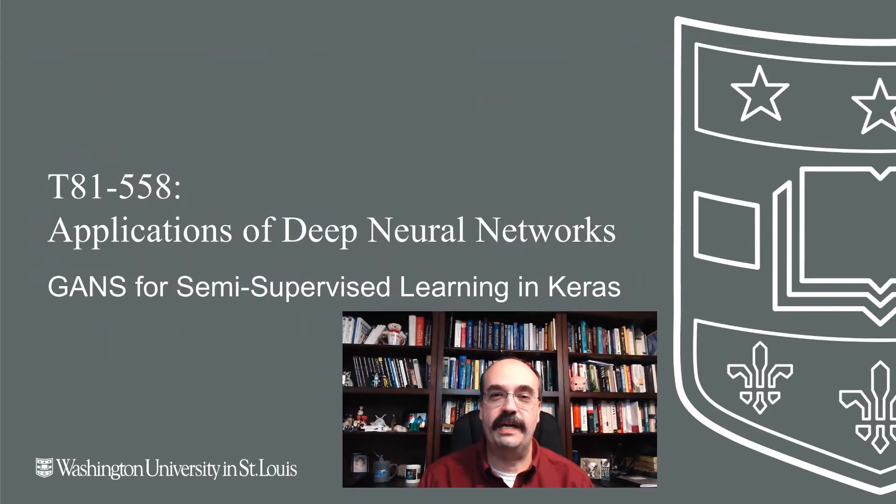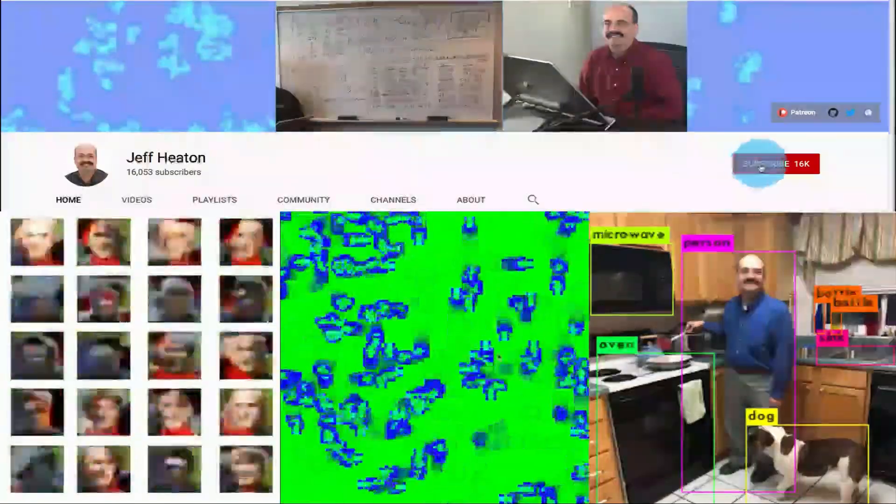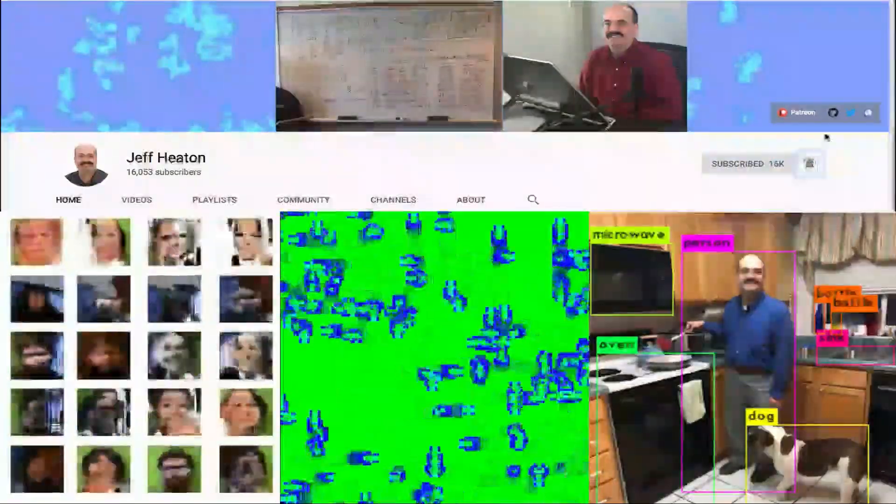Hi, this is Jeff Heen. Welcome to Applications of Deep Neural Networks with Washington University. In this video, we're going to look at how we can use GANs to generate additional training data. For the latest on my AI course and projects, click subscribe and the bell next to it to be notified of every new video.